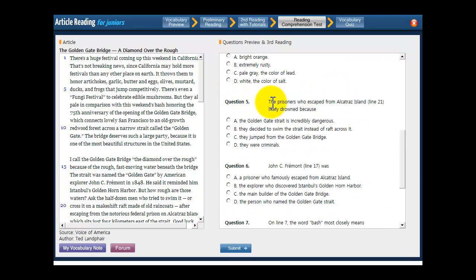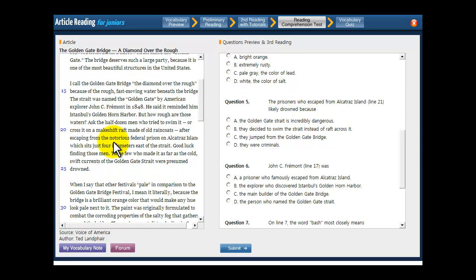Down here. Okay. So the prisoners who escaped from Alcatraz Island likely drowned because. Always change it into a real question with a question mark at the end like this. Why did the prisoners who escaped from Alcatraz prison drown? Go to line 21 and let's try to find out why they drowned. Ask the half dozen men who tried to swim it or cross it on a makeshift raft made of old raincoats after escaping from the notorious federal prison on Alcatraz Island, which sits just four kilometers east of the straight. Good luck finding those men. Those few who made it as far as the cold, swift currents of the Golden Gate straight were presumed drowned.